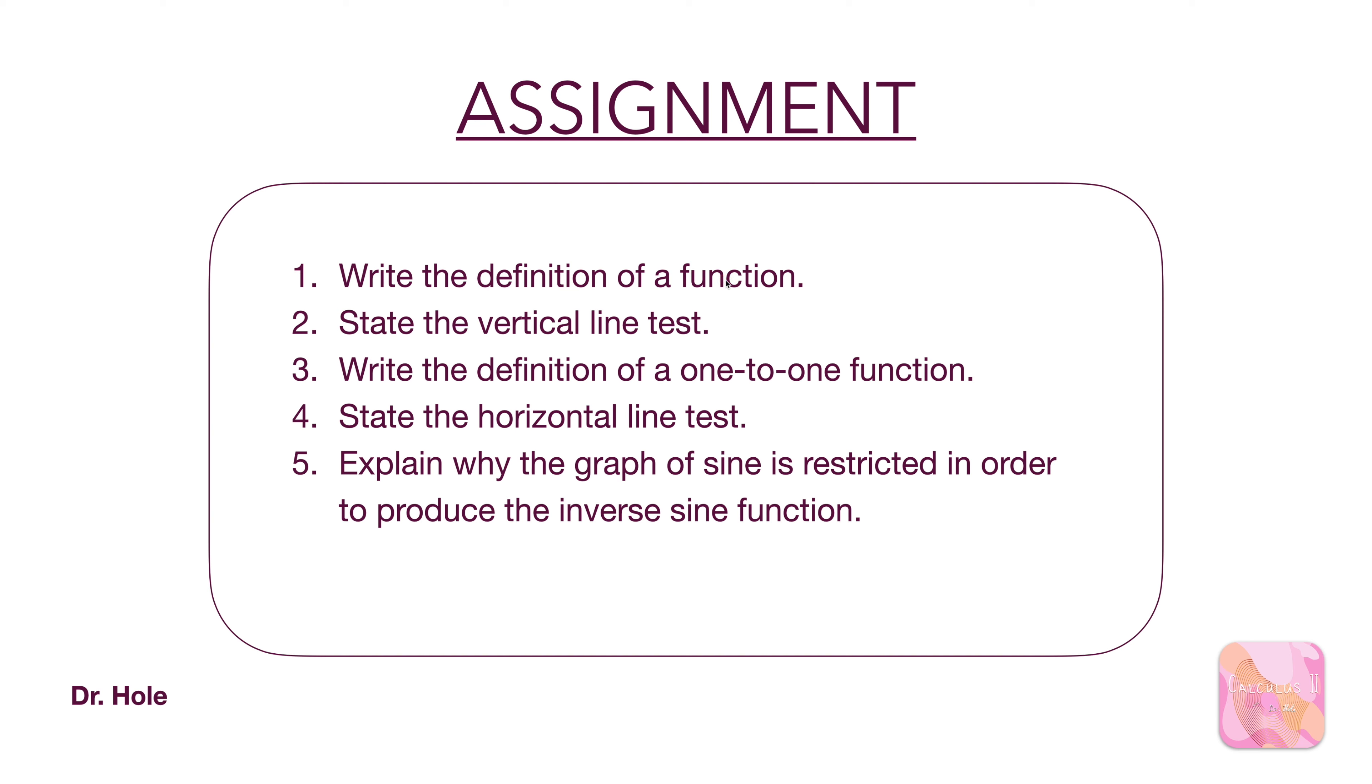Before moving on, make sure that you can easily write down the definition of a function, that you know the statement of the vertical line test and how that's testing for functionality. Make sure to go back and review how the definition of a function can be slightly altered to produce the definition of a 1 to 1 function and how the horizontal line test is testing whether the graph of a function is a 1 to 1 function. And then apply that into arguing why we restrict the graph of sine to produce the graph of inverse sine.